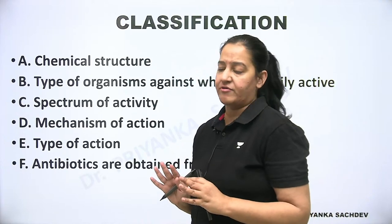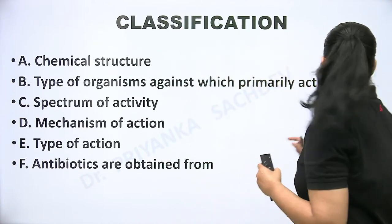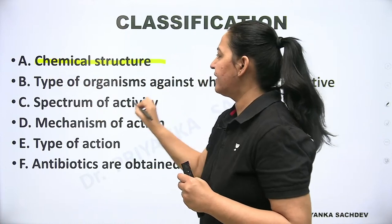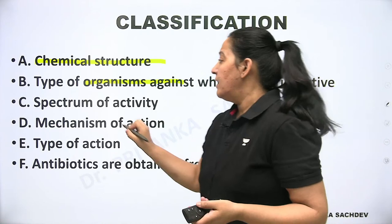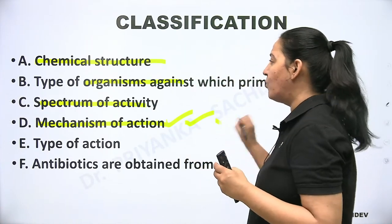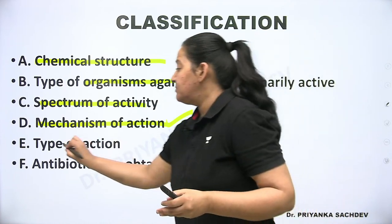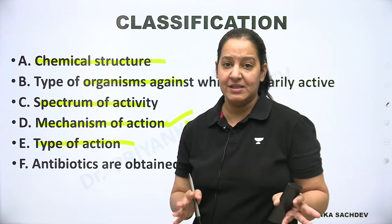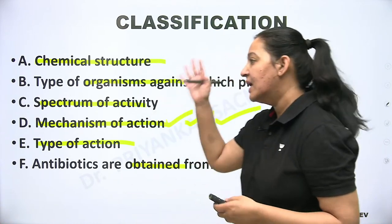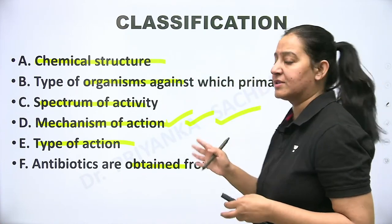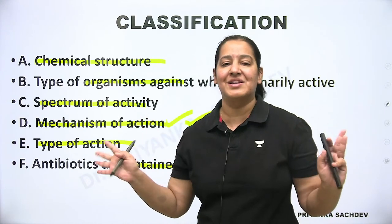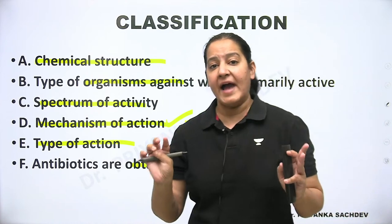There are six ways to classify antimicrobial drugs. We can classify them based on: chemical structure, the organism against which they are active, spectrum of activity (narrow or broad), mechanism of action — which is the most important and on which my chapters are based — type of action (bactericidal or bacteriostatic), and the organism from which the antibiotic is obtained (fungus, bacteria, or actinomycetes).